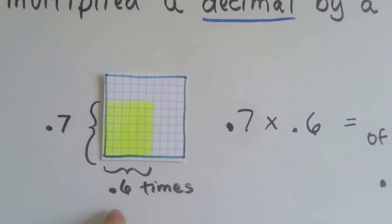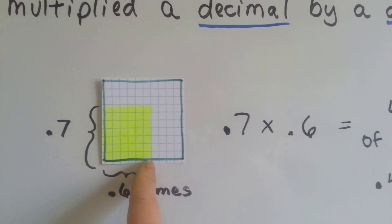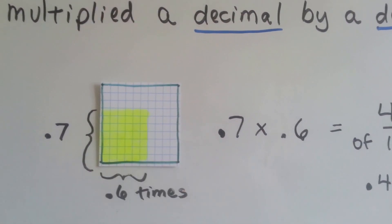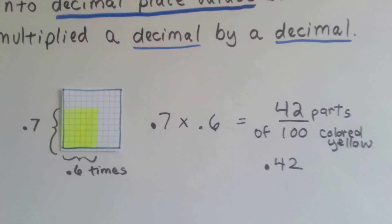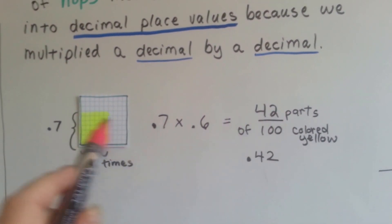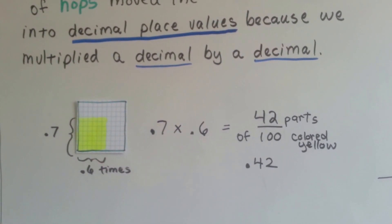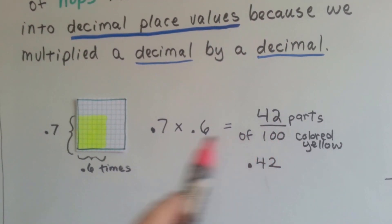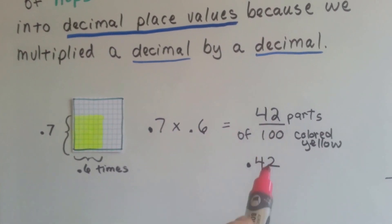So we're going to multiply it by six tenths. That means we're going to do it six times this way, but in tenths. Seven tenths, six tenths of the time, ends up being forty-two of these little squares are colored in out of the hundred of them. It makes a fraction of forty-two of the hundred are colored yellow, or forty-two hundredths. See? .42.